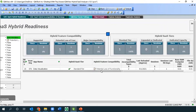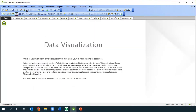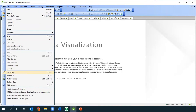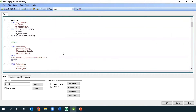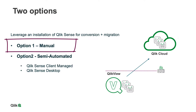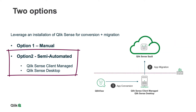Once we get through the assessment phase and have a good grasp of the apps, where do we start with the conversion phase? We start with our app, which is being loaded by both a SQL server connection and a group of QVDs. The first option would be a manual effort — straight from QlikView to QlikCloud. The semi-automated way, which uses a couple of handy tools, is to bounce through Qlik Sense. If you have Qlik Sense already, you can use the QlikView converter.